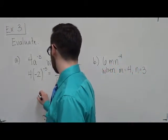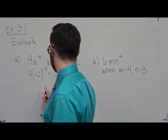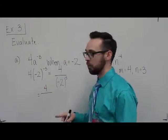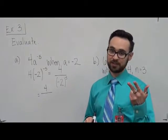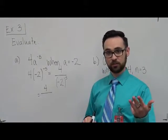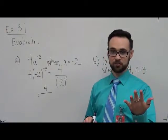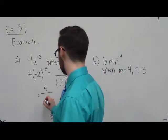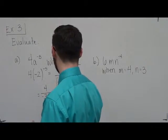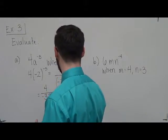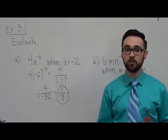So then, if we look at this, we have 4 over negative 2 to the 5th power. Well, negative 2 times negative 2 is a positive 4, times negative 2 is a negative 8, times negative 2 is a positive 16, times negative 2 is a negative 32. We can reduce that and make it 1 over negative 8. So the evaluation there is 1 over negative 8.